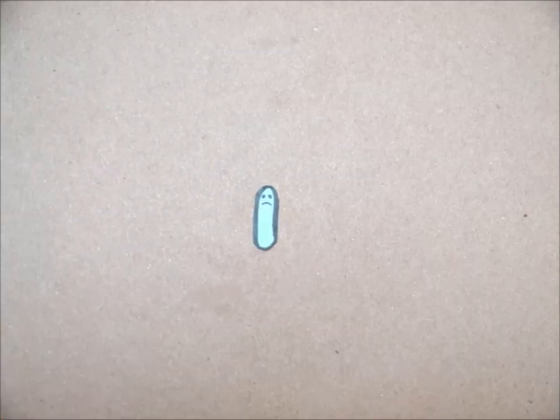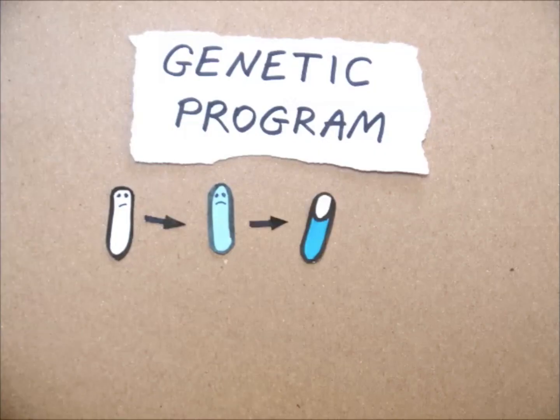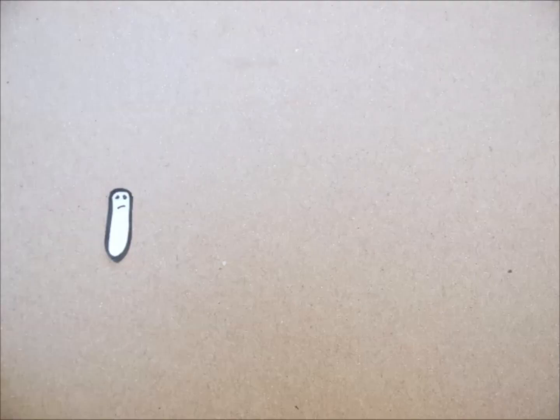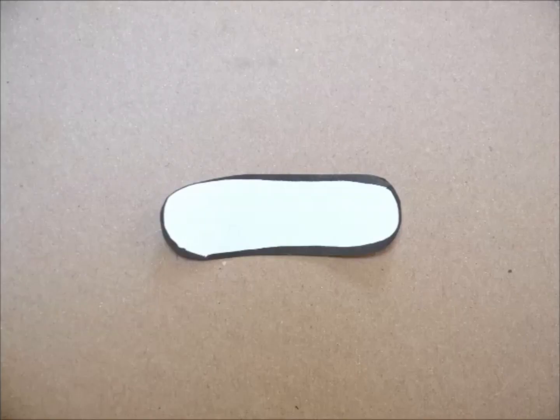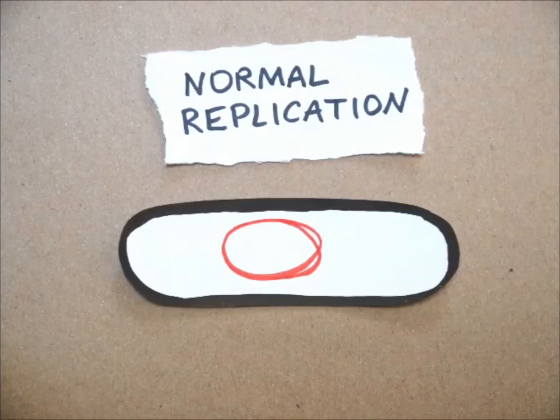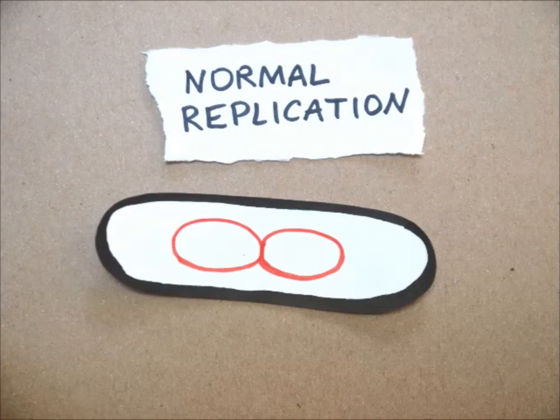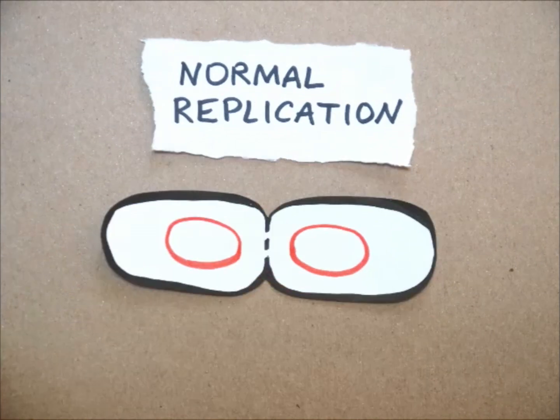Here we study the genetic program that allows cells to produce spores. When food is plentiful, cells replicate their DNA and divide in half to produce two identical daughter cells, each getting their own DNA.